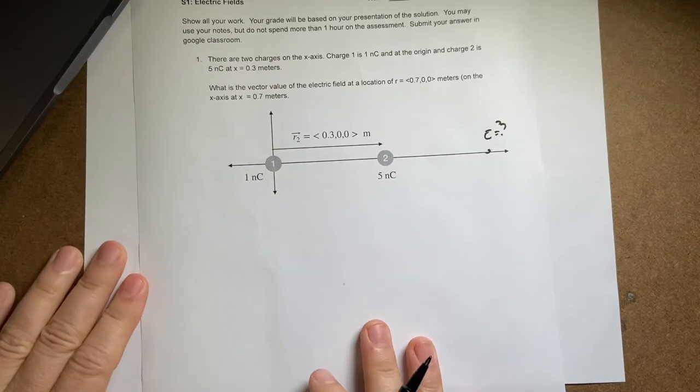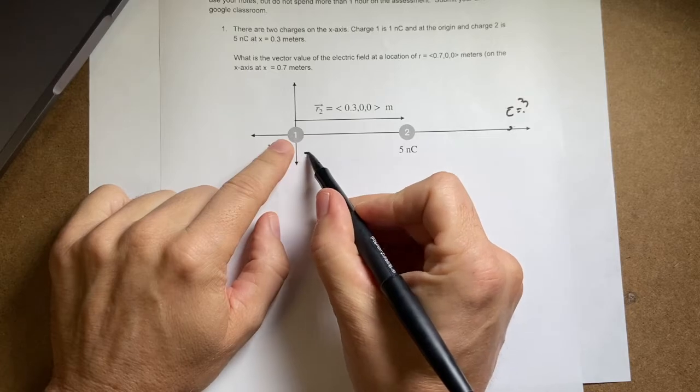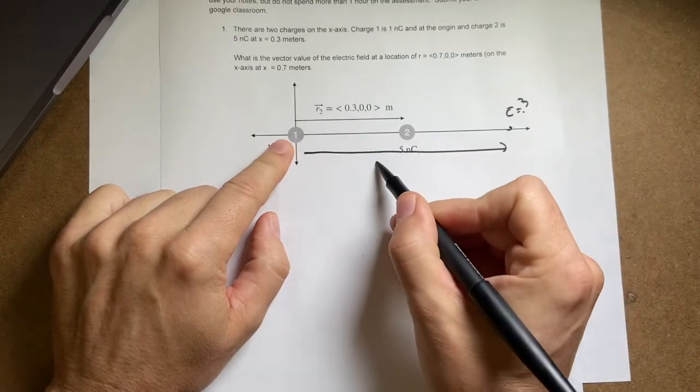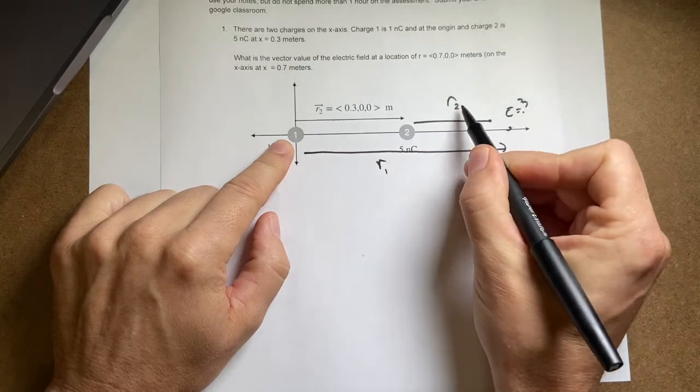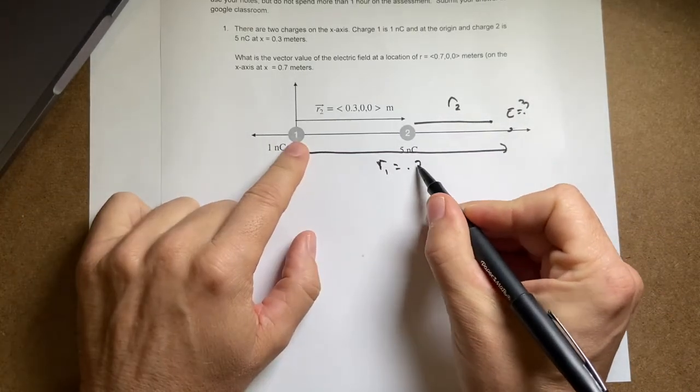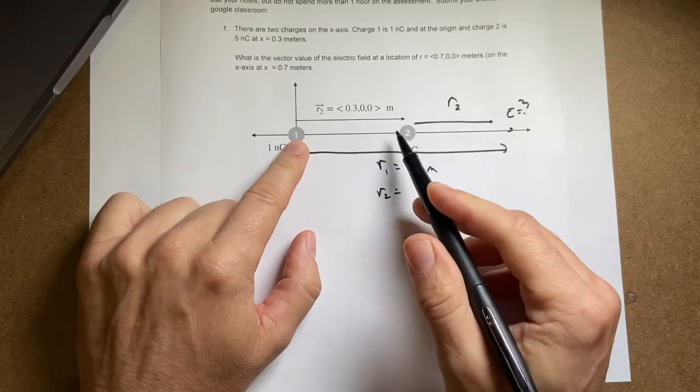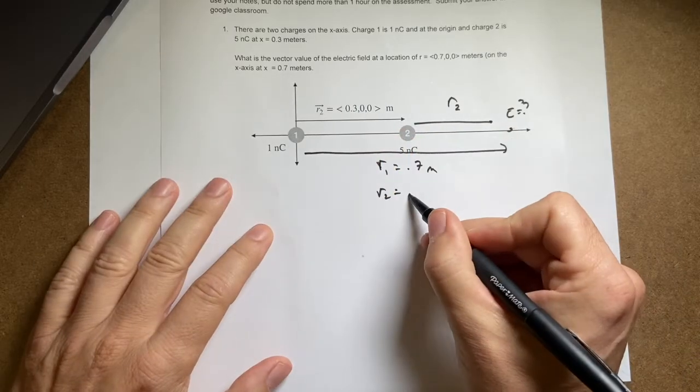Okay, so let me write it out the first simple way. I'm going to call this X. Let's call that R1 and that R2. And those are distance. So R1 would be equal to 0.7 meters. R2 is equal to, this is 0.3, that's 0.7, so this would be 0.4 meters.